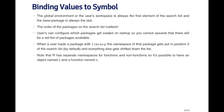One thing to note is that R has separate namespaces for functions and non-functions. So it's possible to have an object named C somewhere and a function named C. In your global environment, there can only be one symbol named C, but you can have a vector named C, and that won't necessarily interfere with the function that already exists that's also named C.